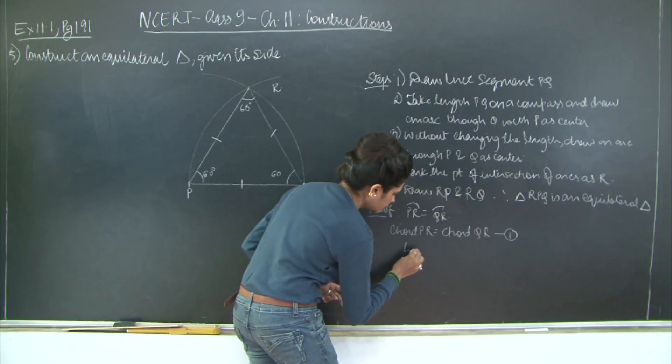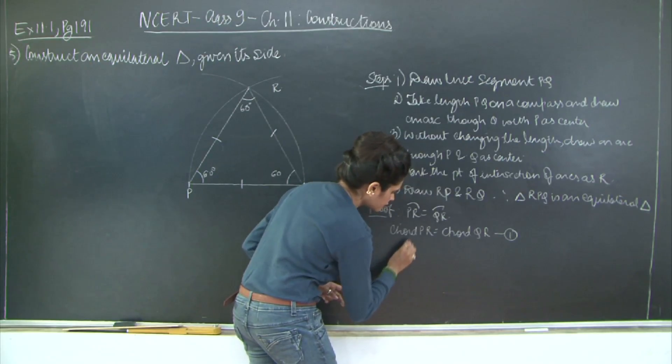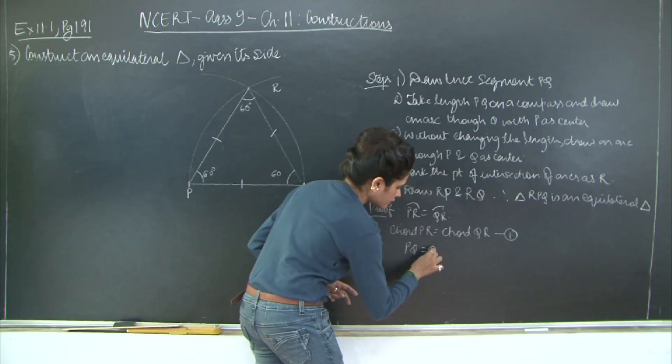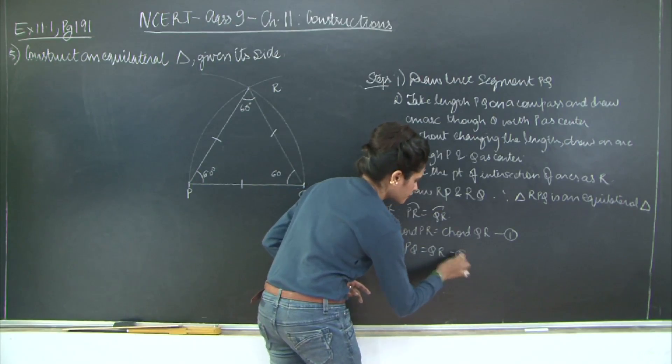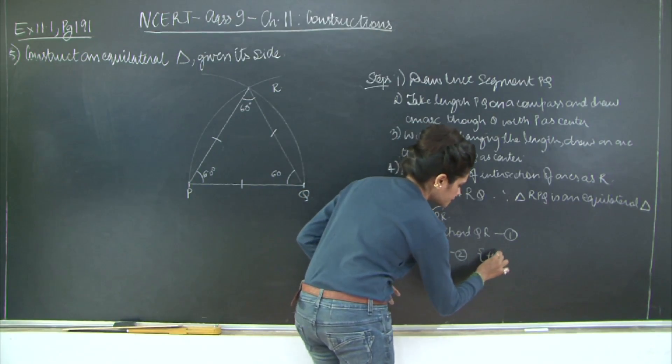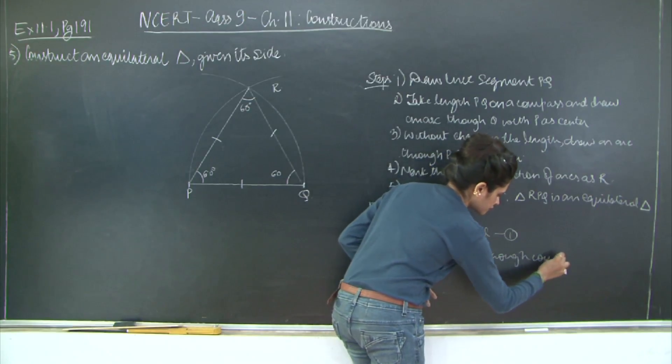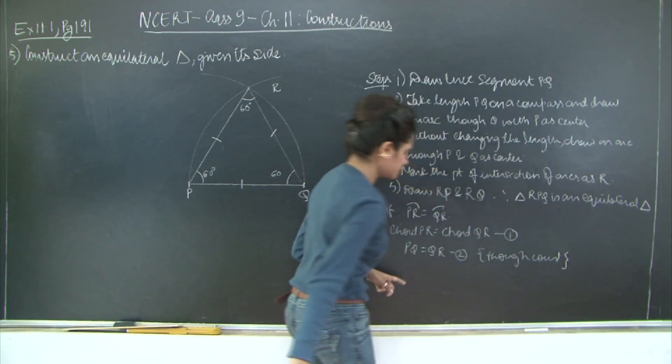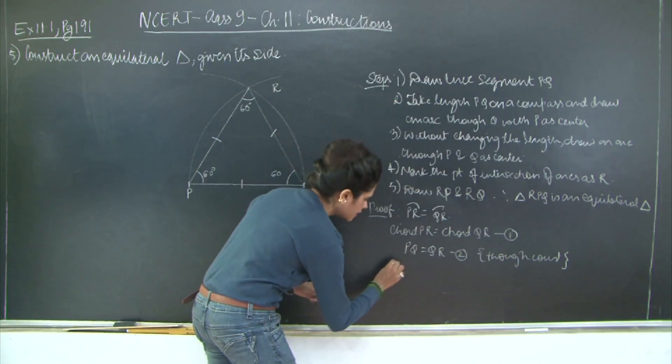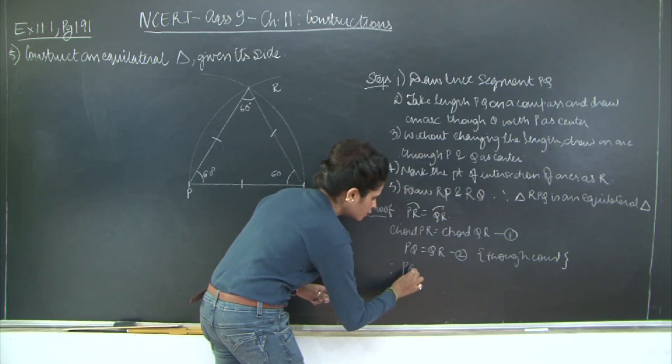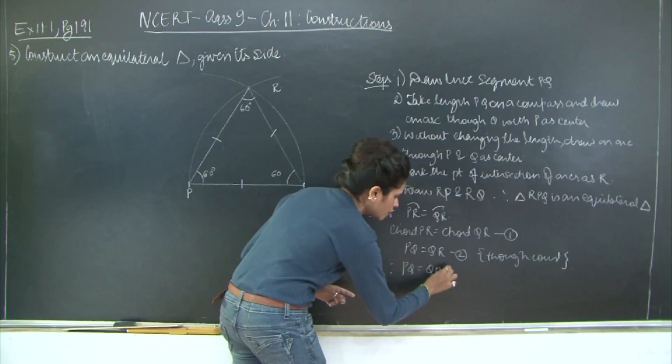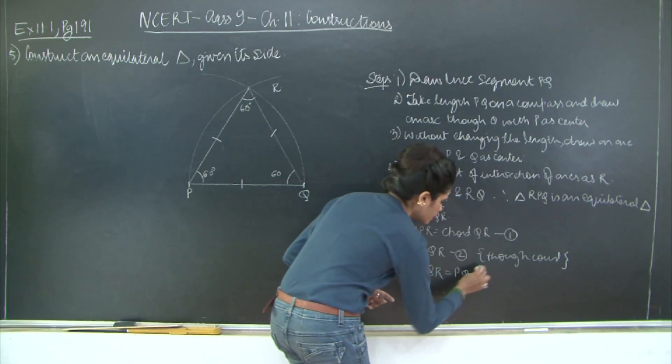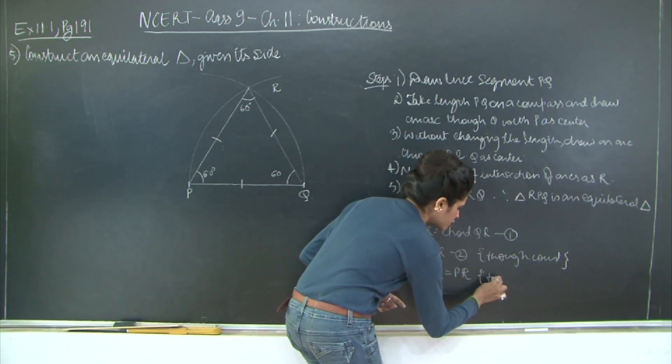Length PQ equals length QR through construction - this is equation 2. Therefore from 1 and 2, you have PQ is equal to QR which is equal to PR.